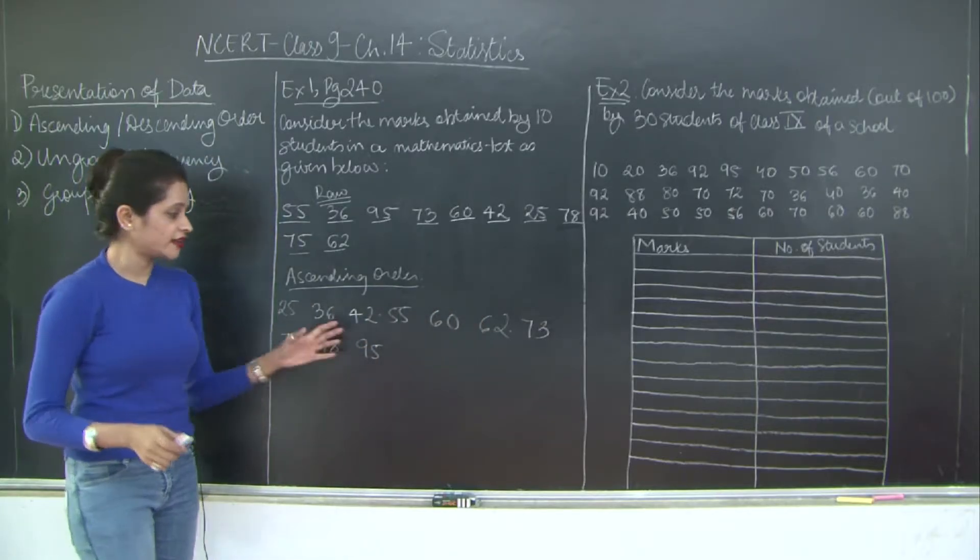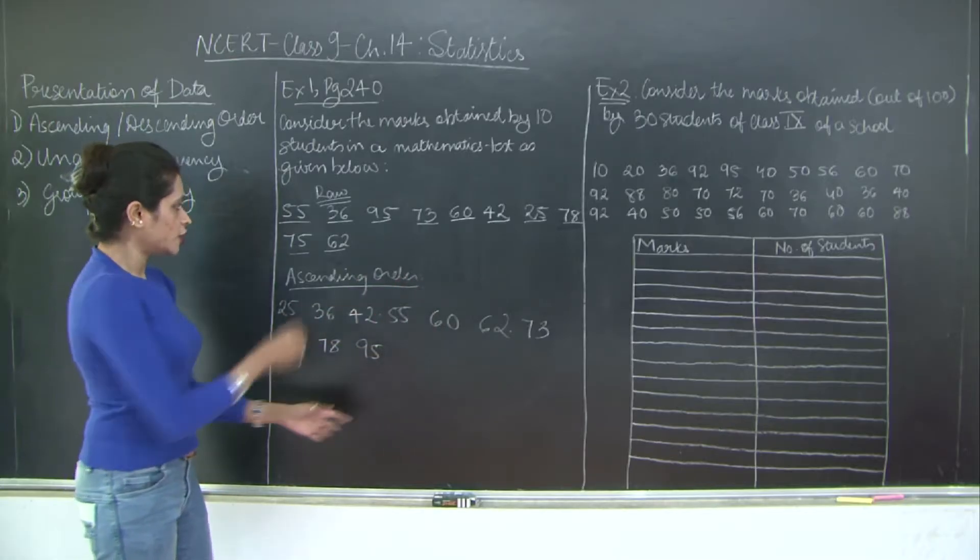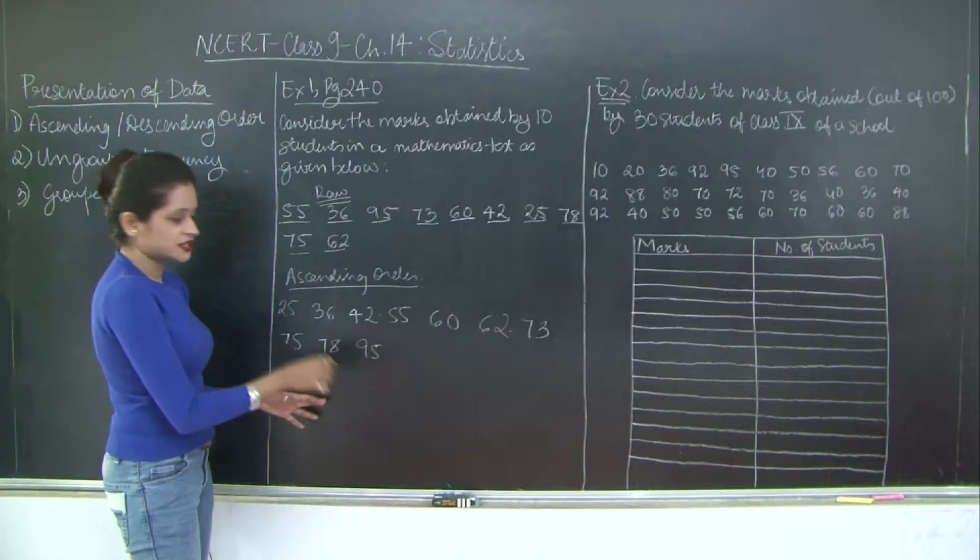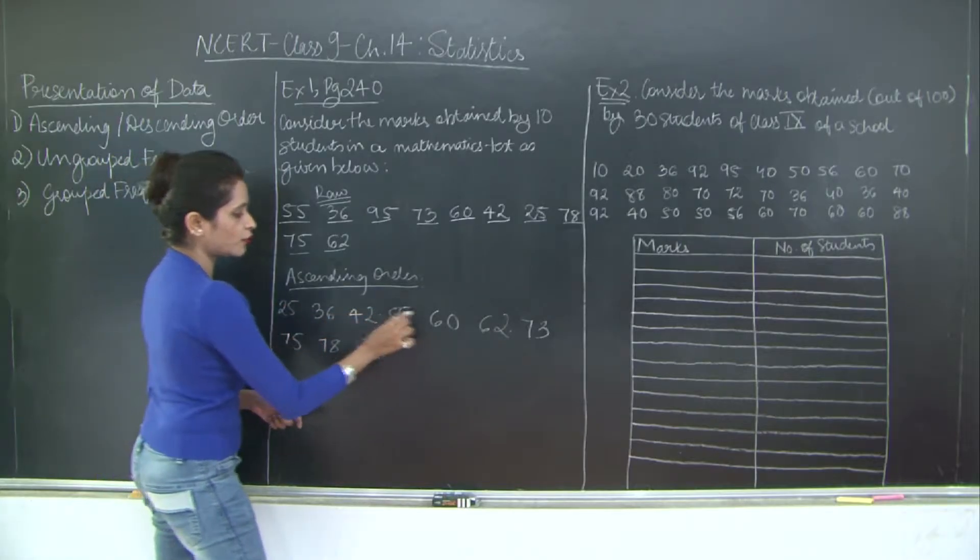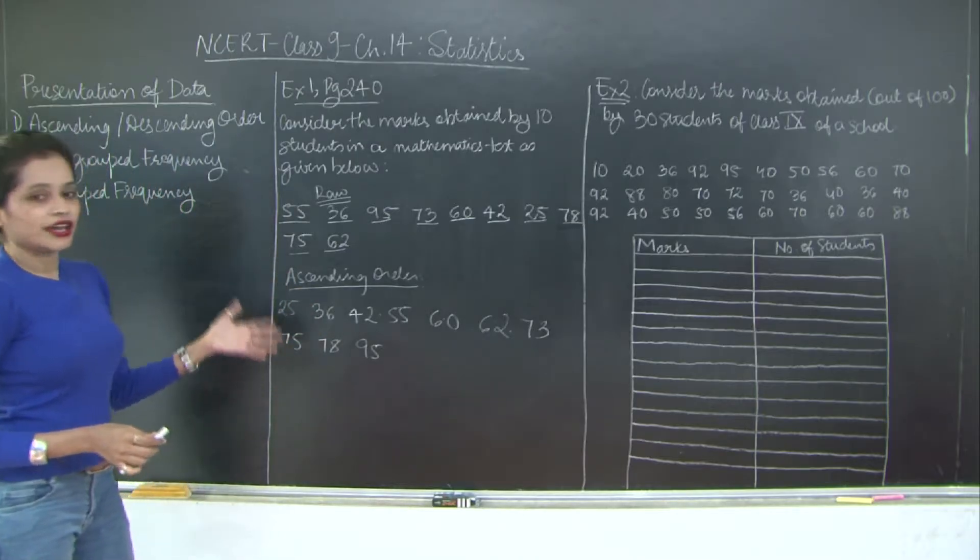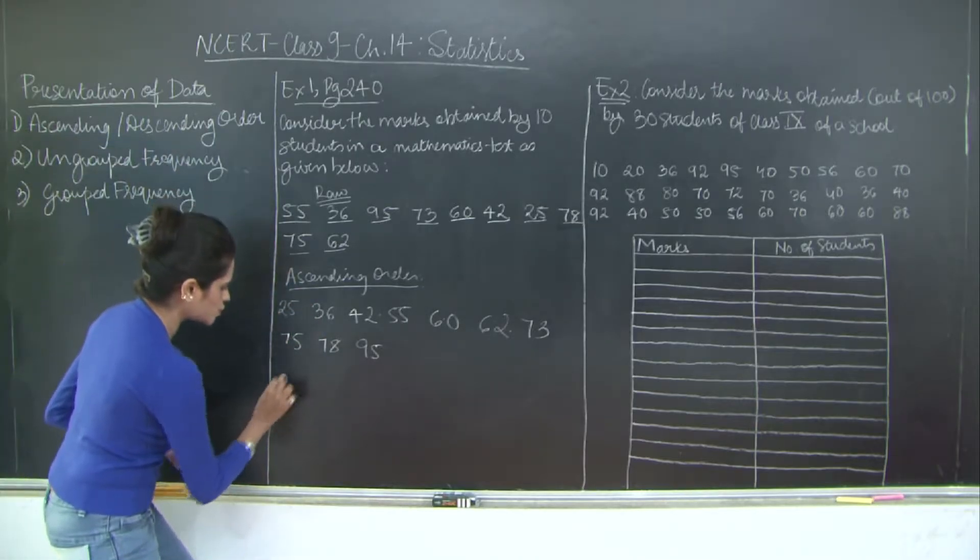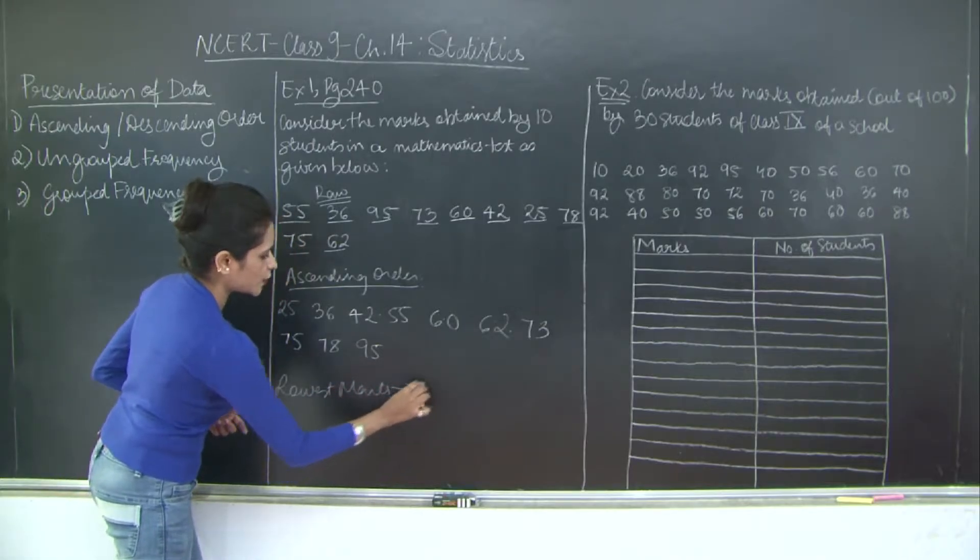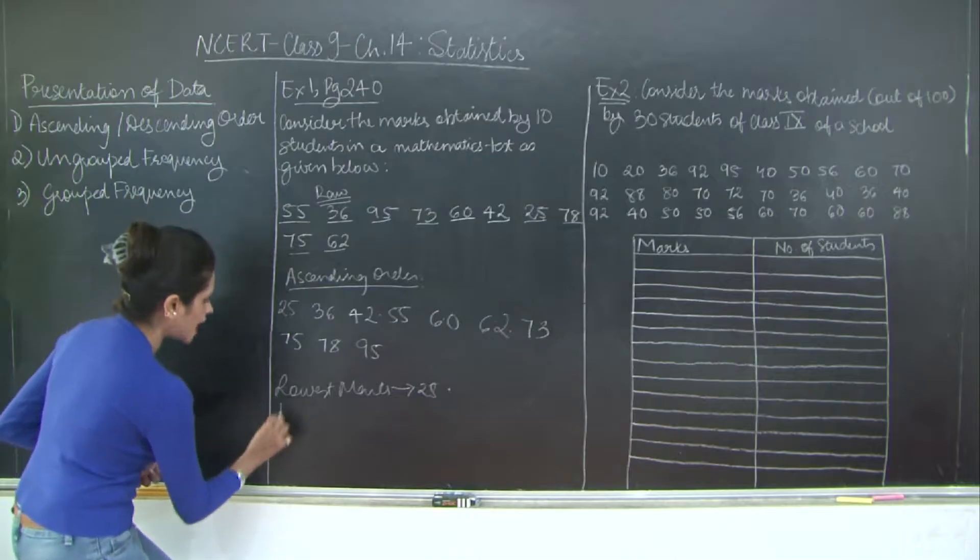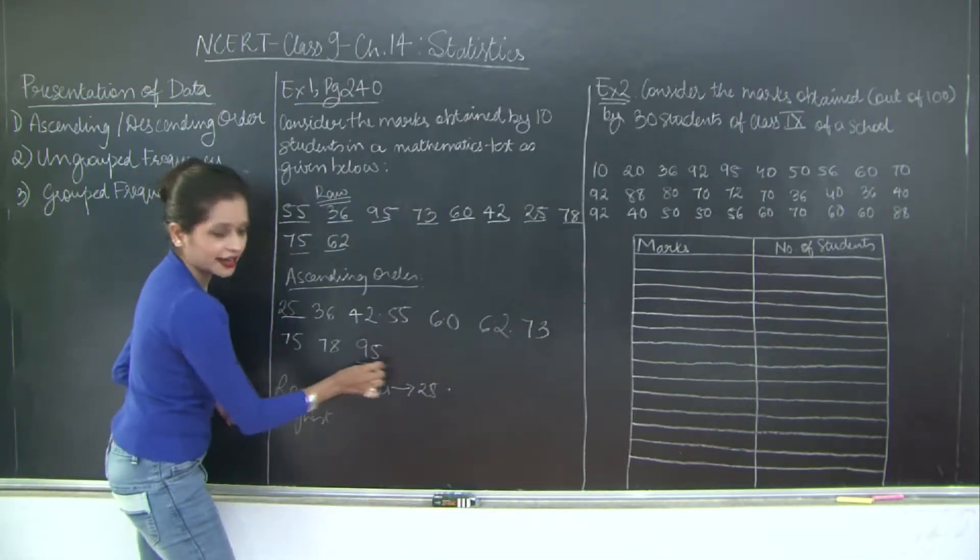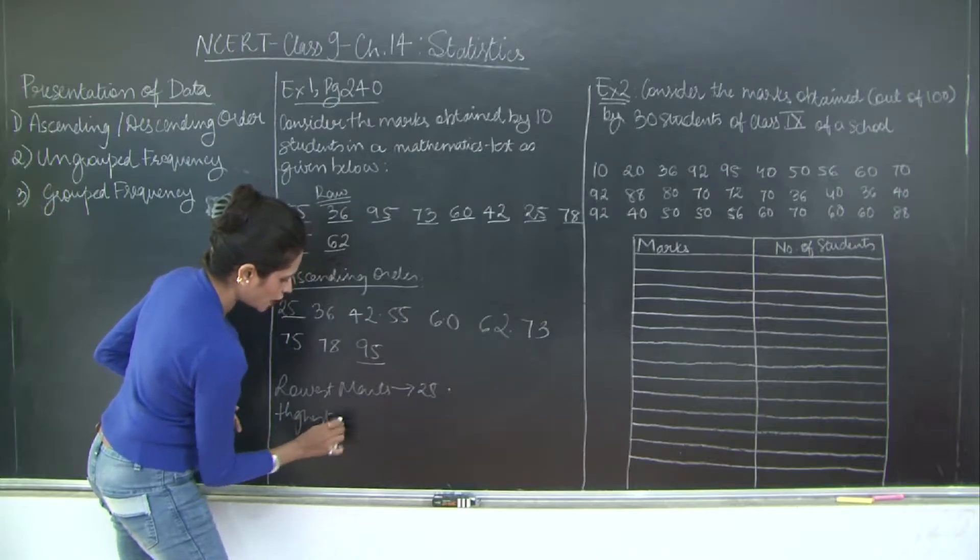Let's just confirm whether the count is the same. So this was the score for 10 students. Let's check whether this count is also 10. So 1, 2, 3, 4, 5, 6, 7, 8, 9 and 10. So now extracting the details of students who scored the lowest marks, the lowest mark is 25 whereas the highest is 95. So highest marks.